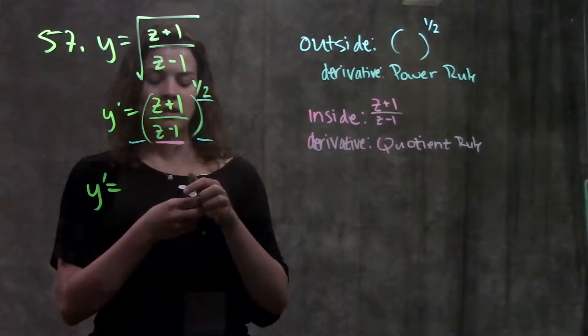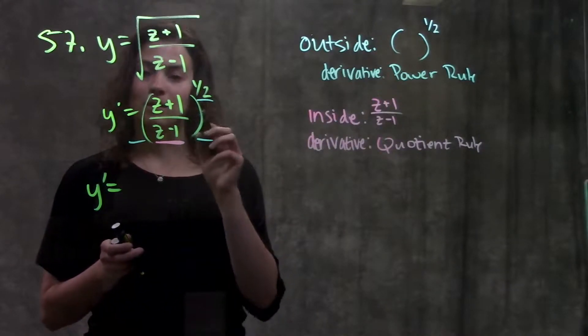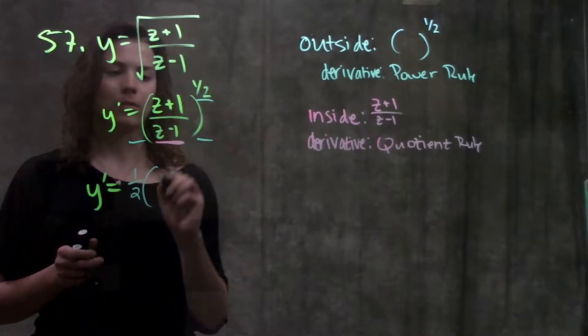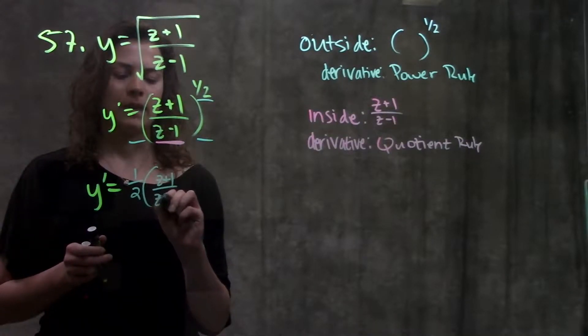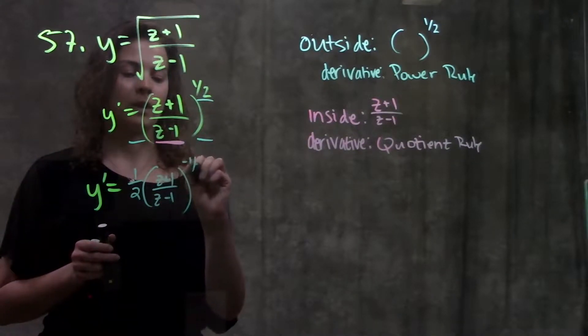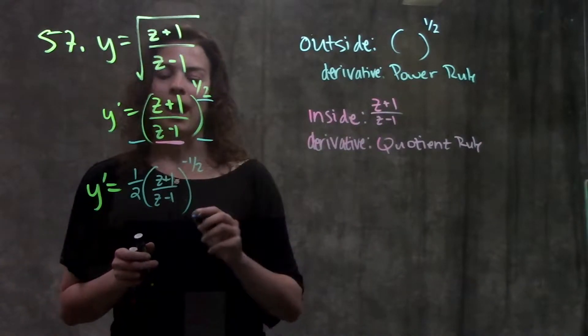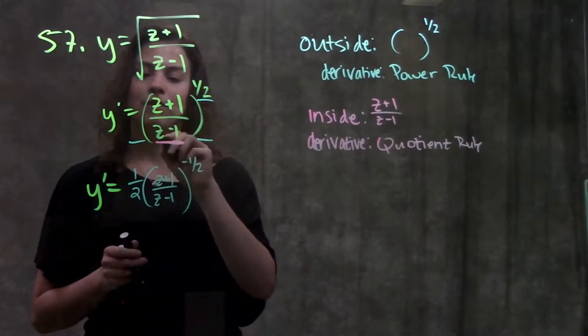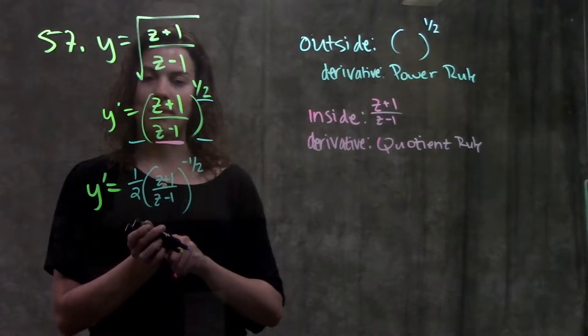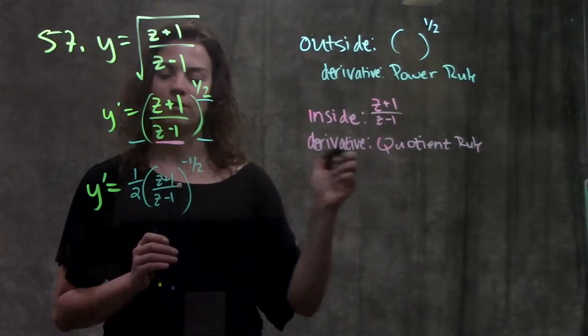So my outside function, to take the derivative of something raised to the one-half power, I use my power rule, bring the exponent to the front, keep the inside the same, and then subtract one from the exponent. And then I'm going to multiply that by the derivative of this inside part. And remember we said that to take the derivative of the inside, we're going to use quotient rule.